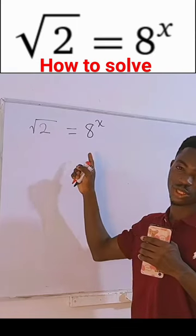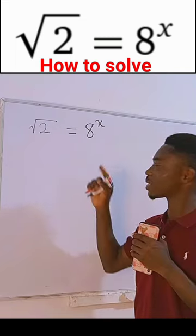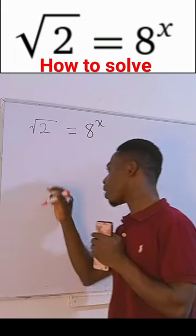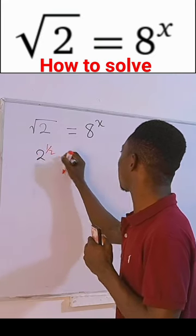Okay guys, for problems like this, don't rush to take log on each side of the equation. Instead, look at the question from this perspective: square root of 2 is the same as 2 to the power one-half, and 8 can also be written as 2 to the third power.